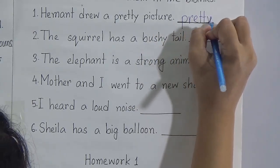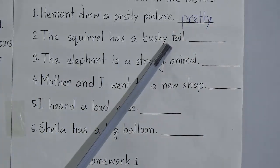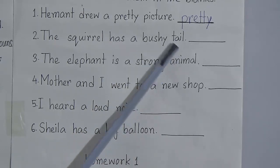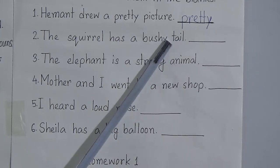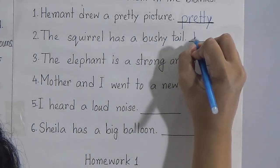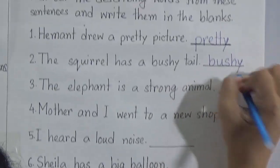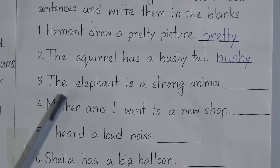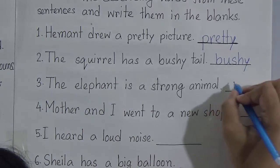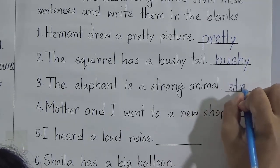Number two: the squirrel has a bushy tail. Bushy describes the tail — how is the tail? It's bushy. So bushy is our describing word. We will write here: bushy. Number three: the elephant is a strong animal — how is the animal? It's strong. So we will write here: strong. Strong is a describing word.